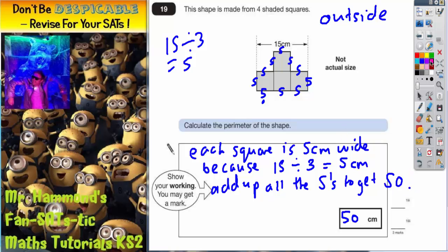Those of you being more efficient and wanting to be quicker, you could say, well, actually they're all five, so if I just count how many fives I've got, I've got one, two, three, four, five, six, seven, eight, nine, ten. You could have just said 10 lots of five equals 50 centimeters.